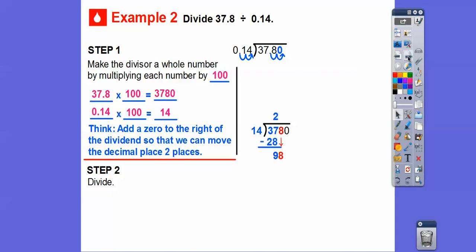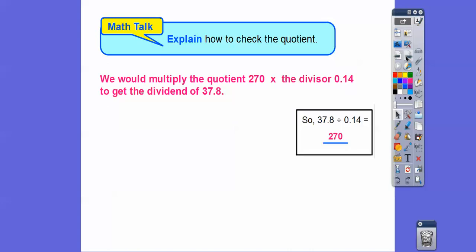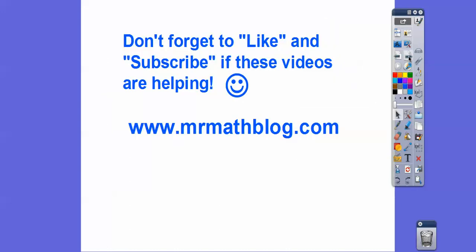14 times 2 is 28. When we subtract, we get 9, slide the 8 down. 14 times 7 is 98. When we subtract, we get 0. Don't forget, we've got one more number to slide down. Even though it's 0, we still have to divide 14 into 0 one more time. It goes in there 0 times, so the answer is 270. How can we check that quotient? We can multiply the quotient, 270, by the divisor 0.14, and when we do that, we should get 37.8. I hope that lesson makes sense. Take care. Thank you.